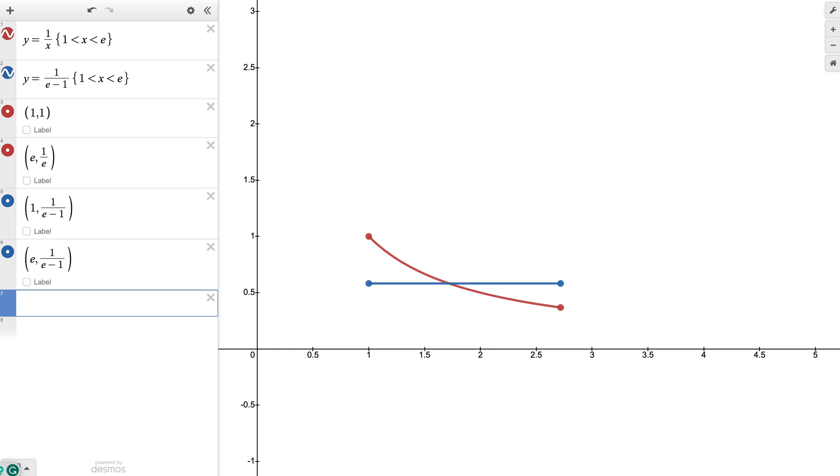Okay, so the red function here is 1 over x and it's restricted to that very specific integral between 1 and e.